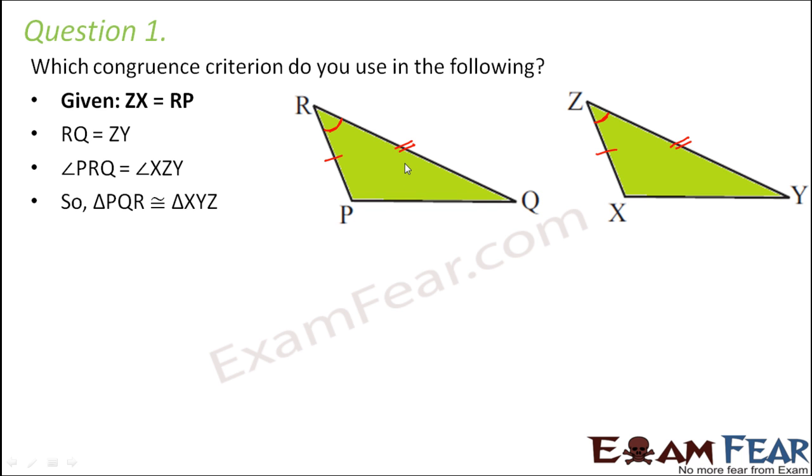Now is it a right angle triangle? No. So RHS criteria is gone. Are we talking only about the sides? No. So SSS criteria is also gone. We are talking about two sides and one angle, and that too, the angle is included between the two sides. So therefore we are definitely talking about the SAS criteria.